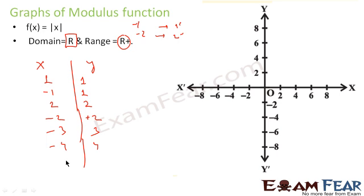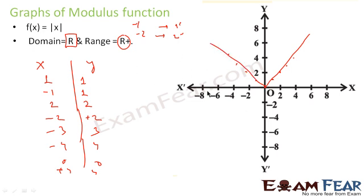Let's draw the graph. For x = 0, y = 0. For x = 1, y = 1; x = 2, y = 2; x = 3, y = 3; x = 4, y = 4. But for x = −1, y = 1; x = −2, y = 2; x = −3, y = 3; x = −4, y = 4. The graph forms a V-shape. The output is always positive, so the range is ℝ⁺, while the domain (x-axis) can be any real number.